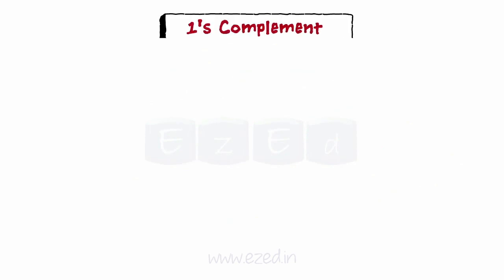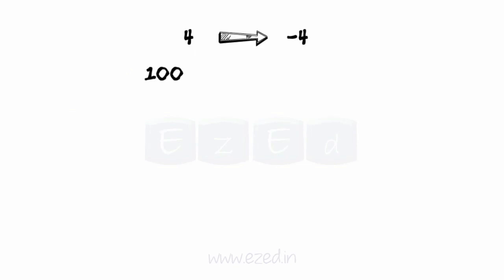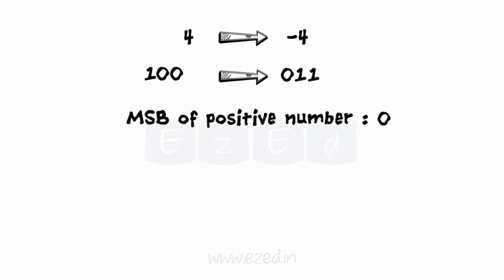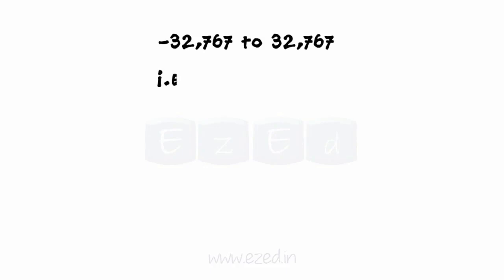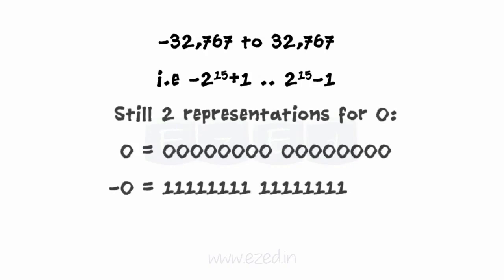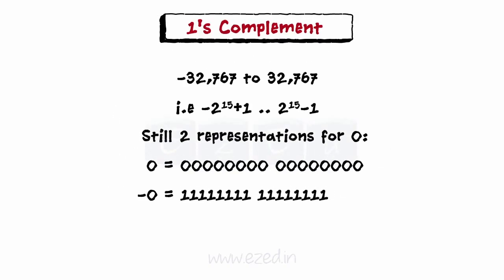Next, we need to study one's complement. A negative number is stored as the bitwise complement of the corresponding positive number. The leftmost bit — that is, the MSB — of a positive number is zero, while that of a negative number is one. It can represent numbers from minus 32,767 to 32,767, that is, minus two raised to fifteen plus one, to two raised to fifteen minus one. But it still has two representations for zero.